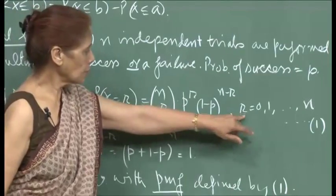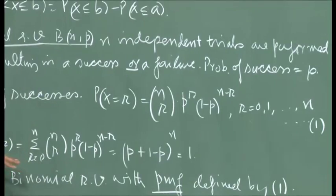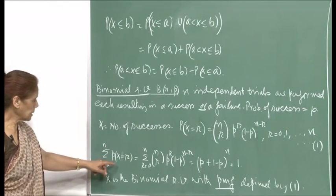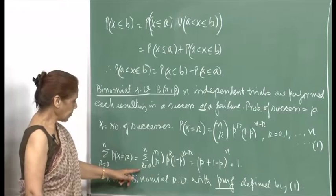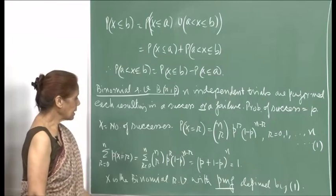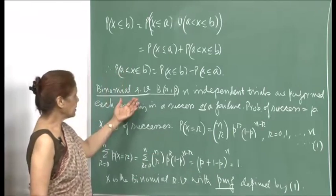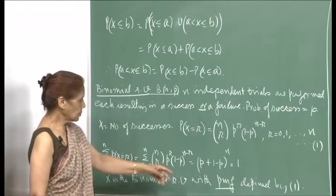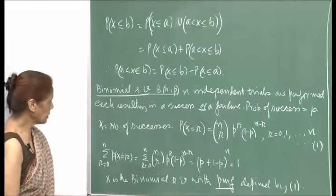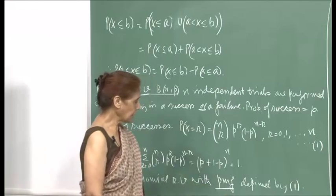Summing this over all values r from 0 to n gives the binomial expansion of (p + (1−p))^n, which equals 1. That is another reason it is called the binomial random variable — the probabilities sum to 1, confirming it is a valid PMF. X is the binomial random variable with probability mass function defined by this formula.